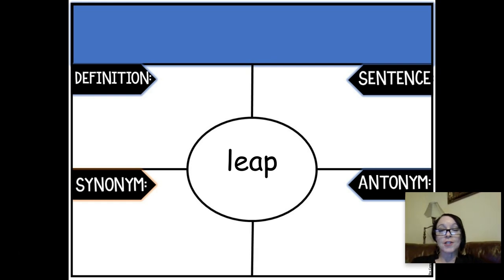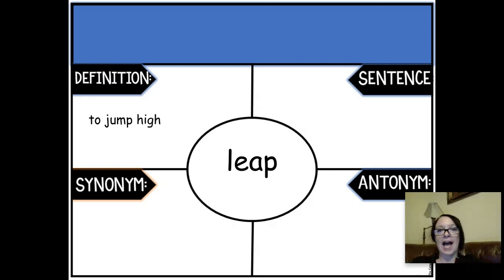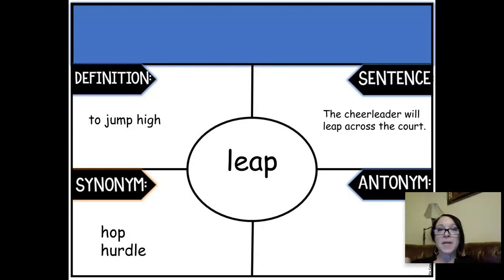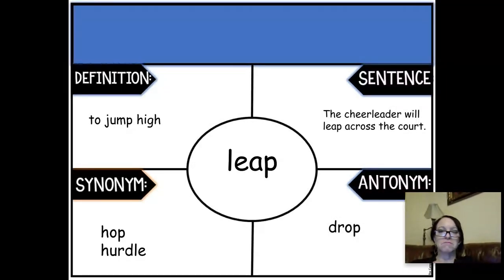All right, friends, back for our synonyms and antonyms, but let's review what we do know. We know that leap means to jump — forward or high is fine. We used the sentence: the cheerleader will leap across the court. Another word for leap would be to hop or hurdle, so the cheerleader will hurdle across the court. The opposite of leap is just drop.